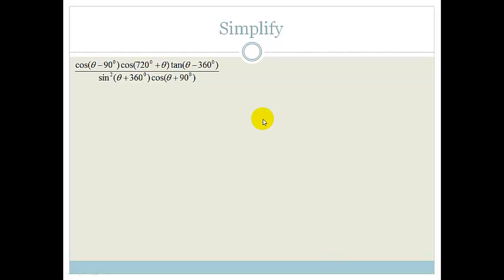So let's look at this. We've got cos of theta minus 90 degrees, cos of 720 plus theta, tan of theta minus 360 degrees, all over sin squared theta plus 360 degrees, cos of theta plus 90 degrees.